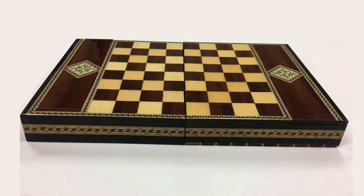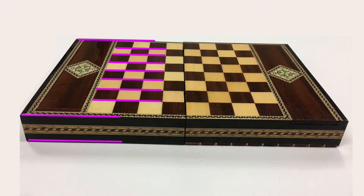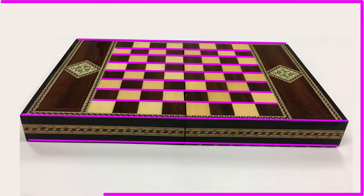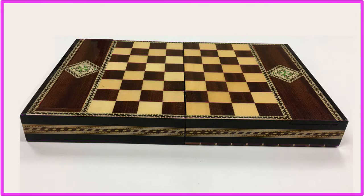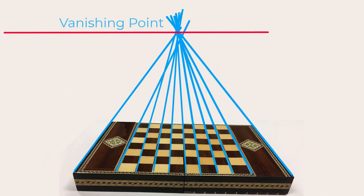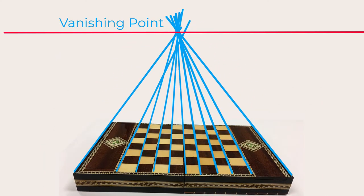In this one point perspective view of a chess board, one set of lines is facing the viewer, so they remain parallel to one another and to the picture plane. While the second set of parallel lines is traveling back in space and converges at a single point. This point will always fall on the horizon line.